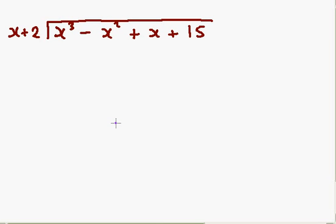OK, so first of all, what you do is you go, how many x's could I get at x cubed? Well, I can get x squared in. OK, because x times x squared is x cubed. And now I multiply through by x squared. I go, x squared times x is x cubed. And x squared times positive 2 is plus 2x squared.